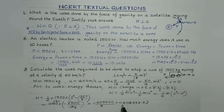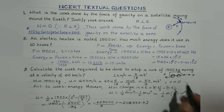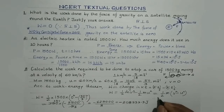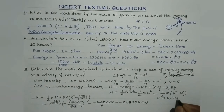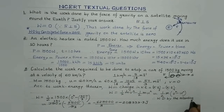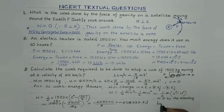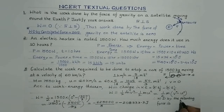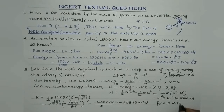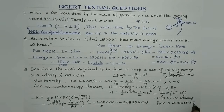So work done is minus 208,333.3 joule. If you write work done by the retarding or braking force, then the negative sign need not be written, so it will be 208,333.3 joule.